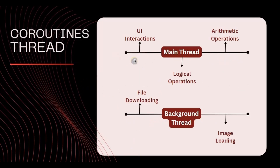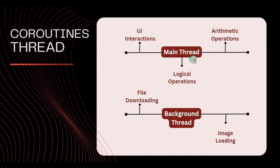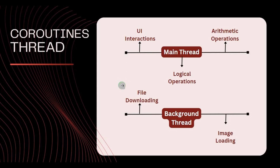Coroutines overcome this burden by dividing the processes into multiple threads — you can call it a coroutine thread or background thread. We have two threads: the main thread handling UI interaction, logical operations, and arithmetic operations, and a background thread handling file downloading and image loading. This makes coroutines non-blocking, allowing sequential execution of tasks without blocking the main thread, which ultimately improves app performance and prevents lagging or freezing.